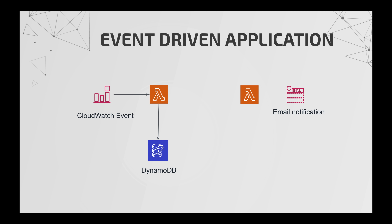The Lambda retrieves subscriber information and publishes messages over an SQS queue. Another Lambda picks up messages from the queue based on the queue trigger and sends email notifications via SNS. So if there are 1,000 people, the first Lambda reads the database, gets the 1,000 users, creates messages and pushes them onto the queue. The second Lambda gets messages from the queue and sends email notifications. I'm leveraging the CloudWatch event scheduler, SQS, and SNS — all existing AWS services — along with two different serverless Lambdas.